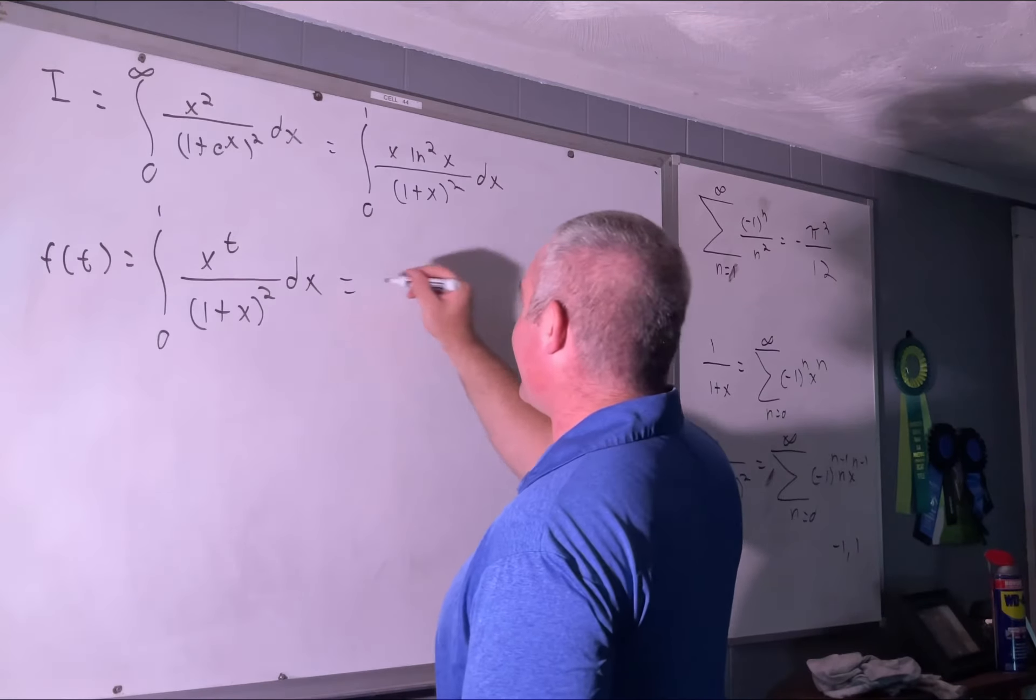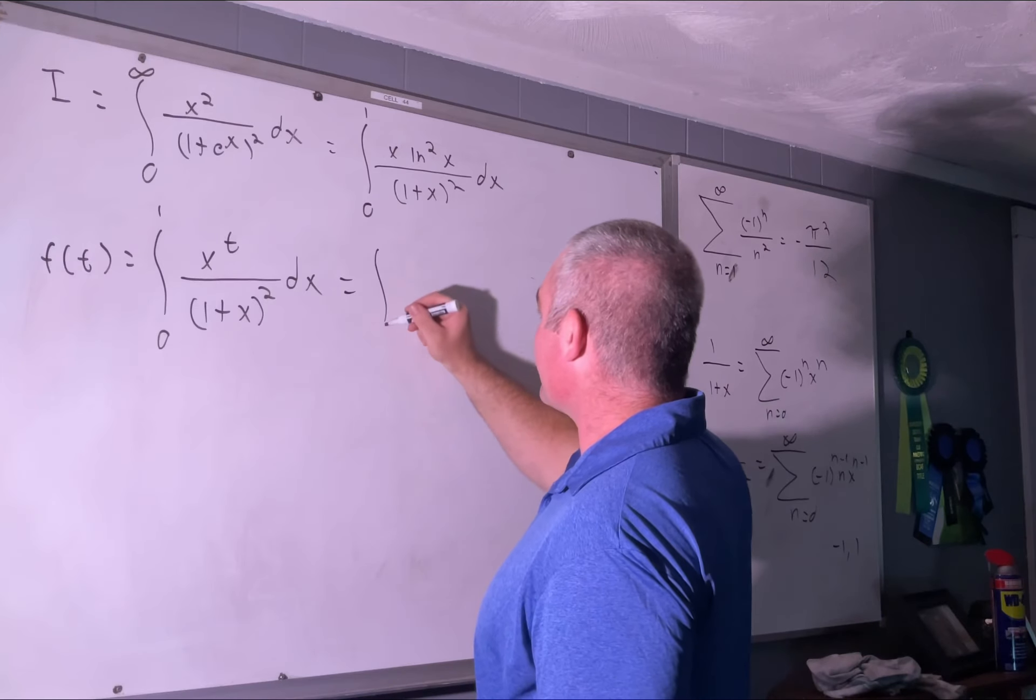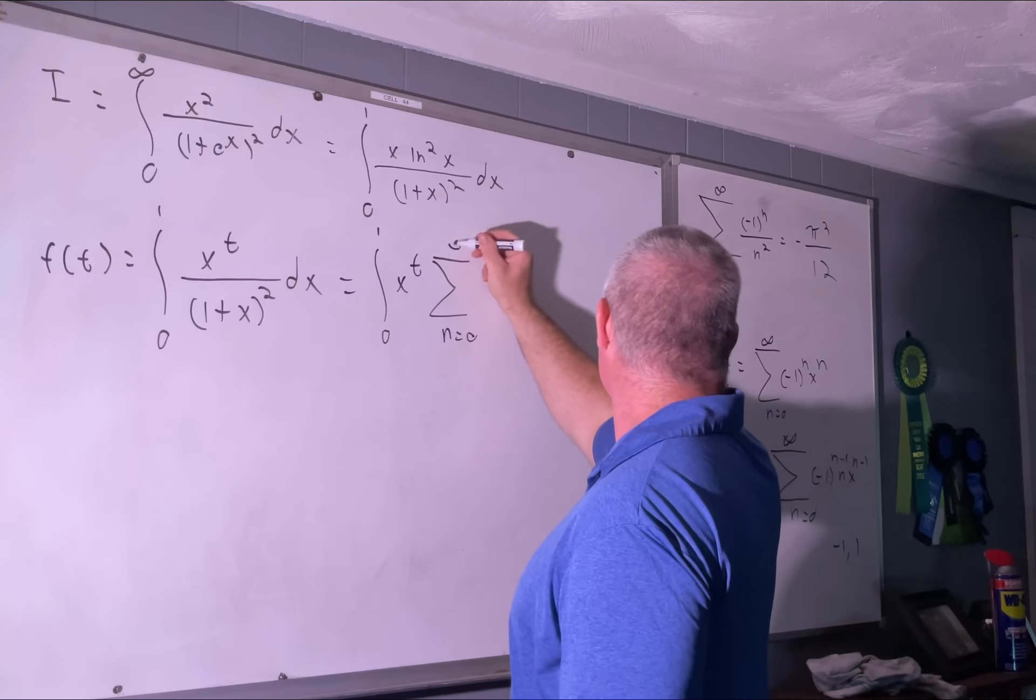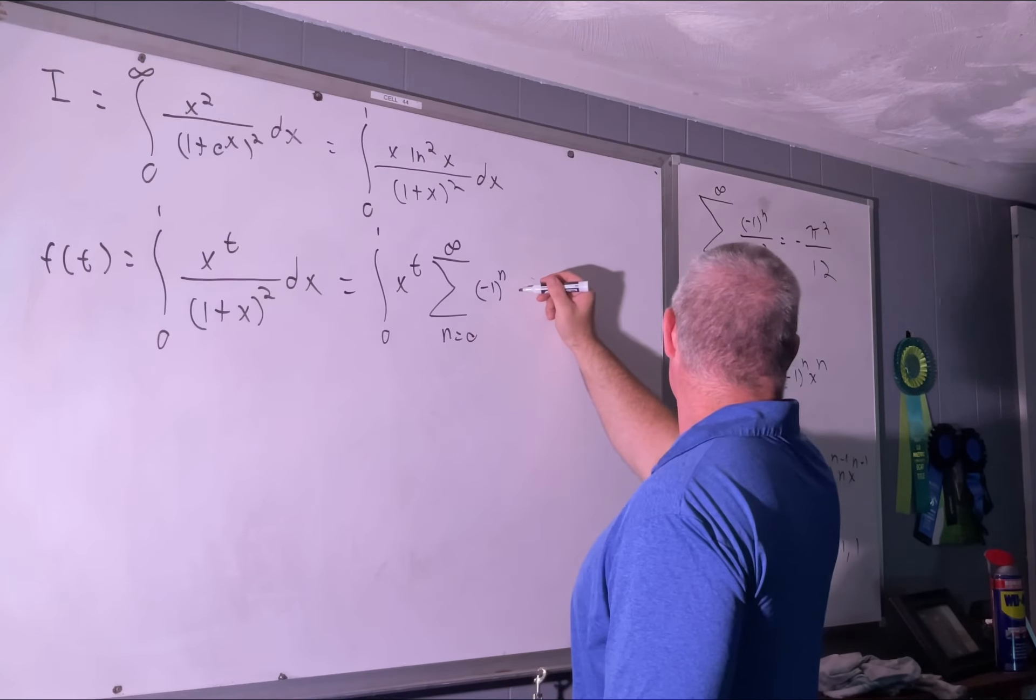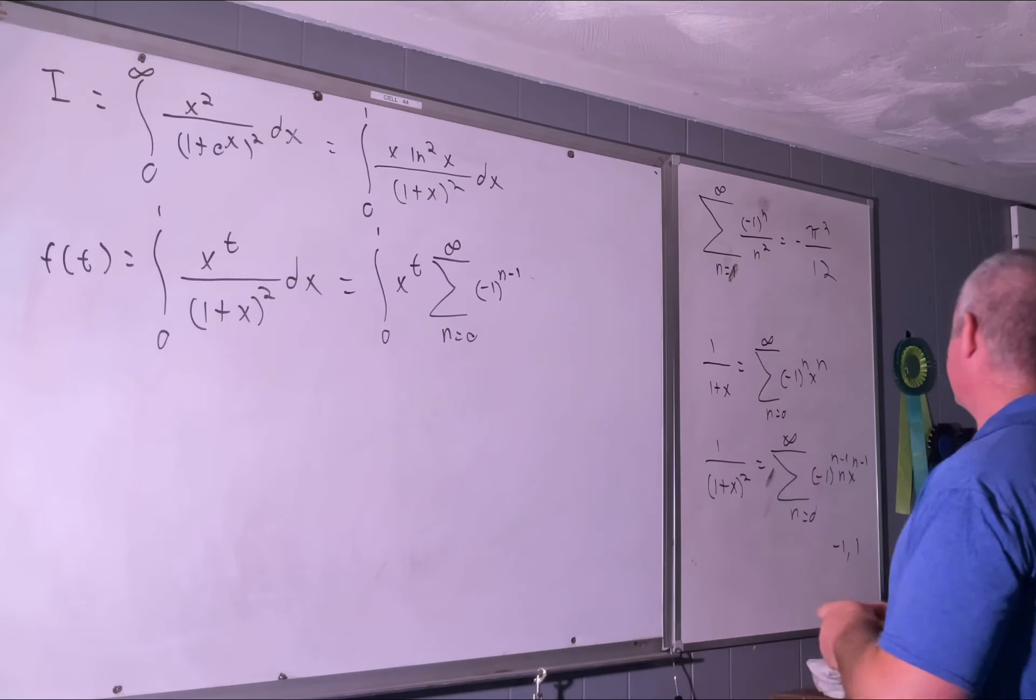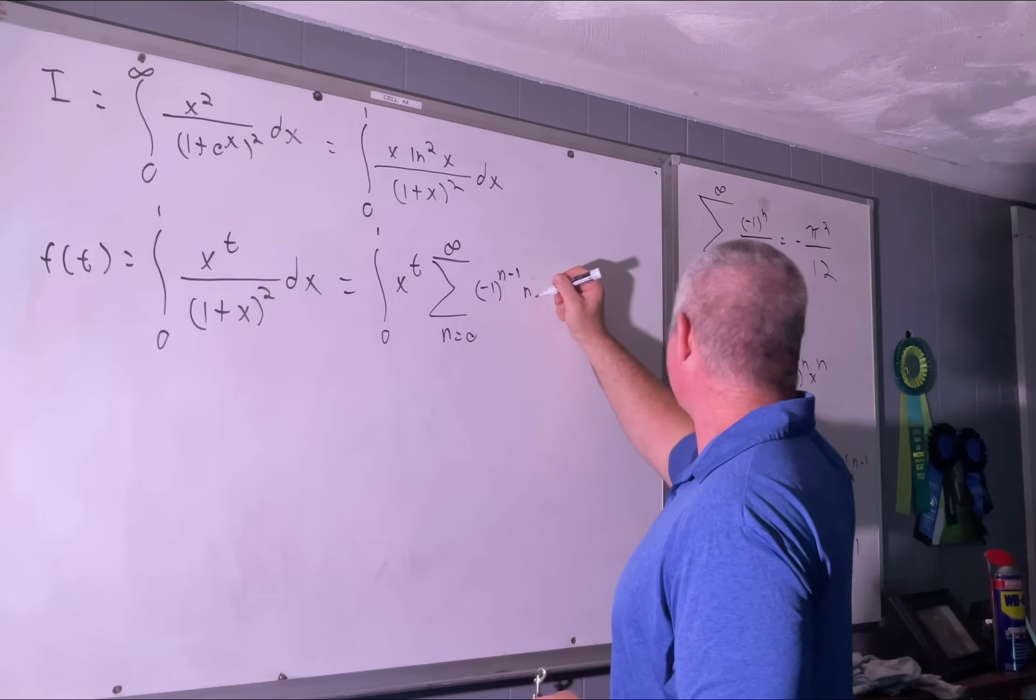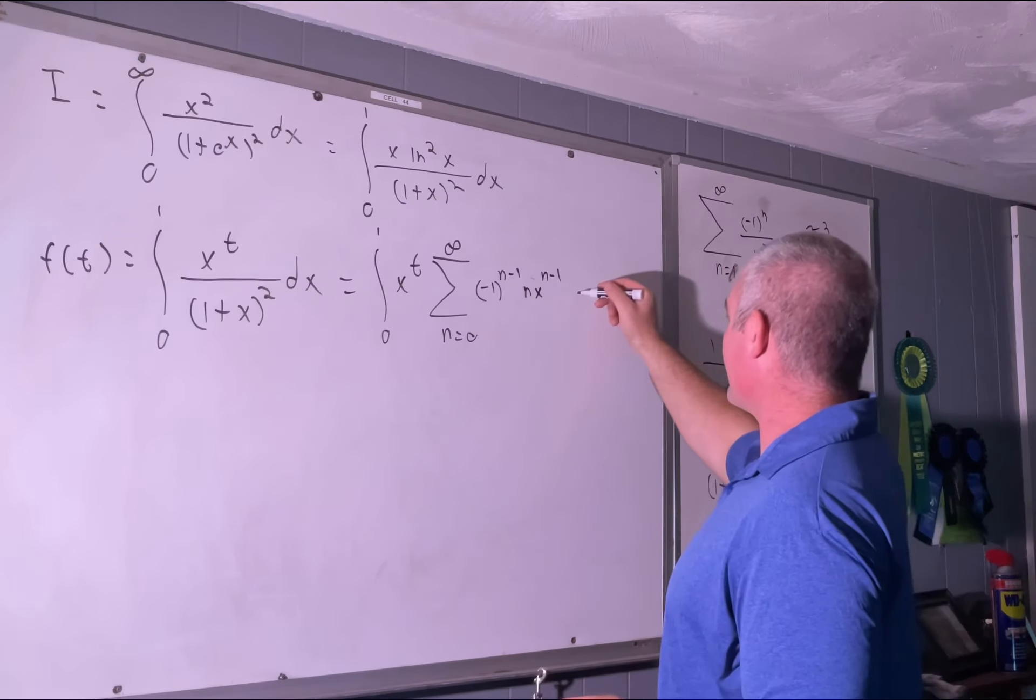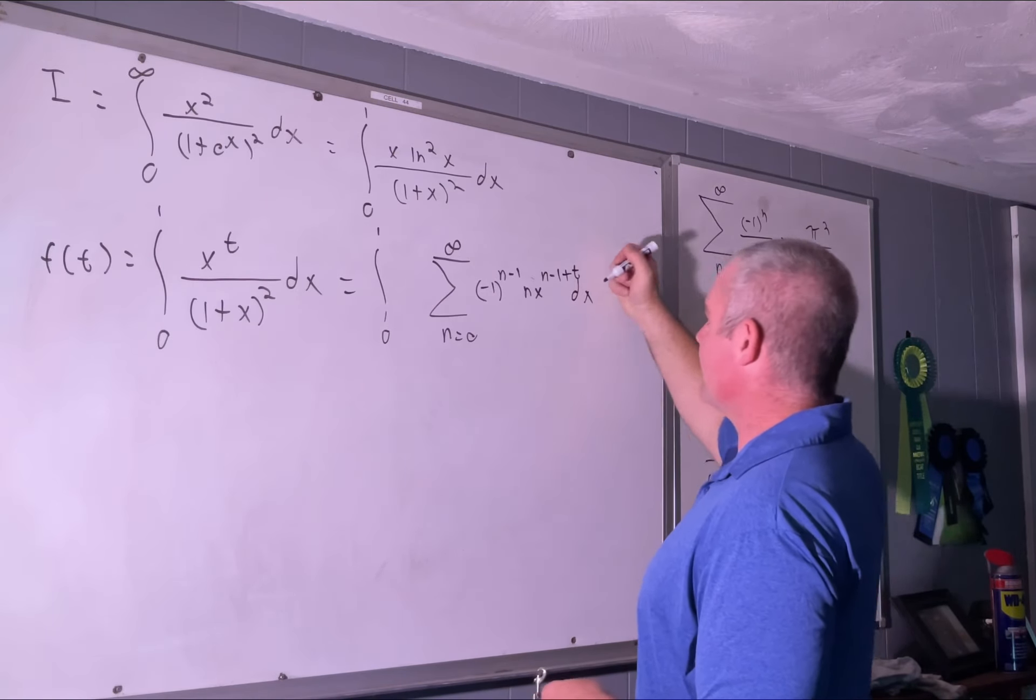Now we can say using this that this is equivalent to the integral from 0 to 1 of x^t times the sum from n=0 to infinity of (-1)^(n-1) times n times x^(n-1) dx. We'll bring this x^t inside the sum.